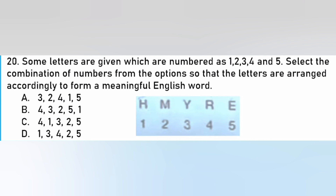Some letters are numbered 1st, 2nd, 3rd, 4th, and 5th. Select the combination of numbers from the options so that the letters are arranged to form a meaningful English word. The letters are H-M-Y-R-E. The word is Rhyme. The answer is C.